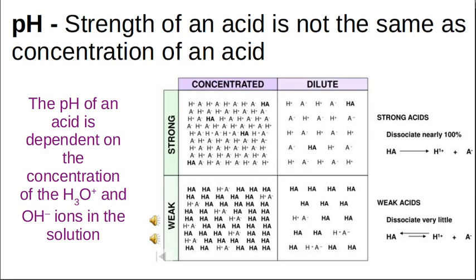We actually measure the strength of acid using pH. pH depends on the concentration of the hydronium ions and hydroxide ions in the solution. So if you look at a strong acid that's concentrated — these HA molecules are the undissociated acid, and over here a proton and anion are the dissociated acids. In a strong acid it's nearly all protons with very few undissociated acid molecules.